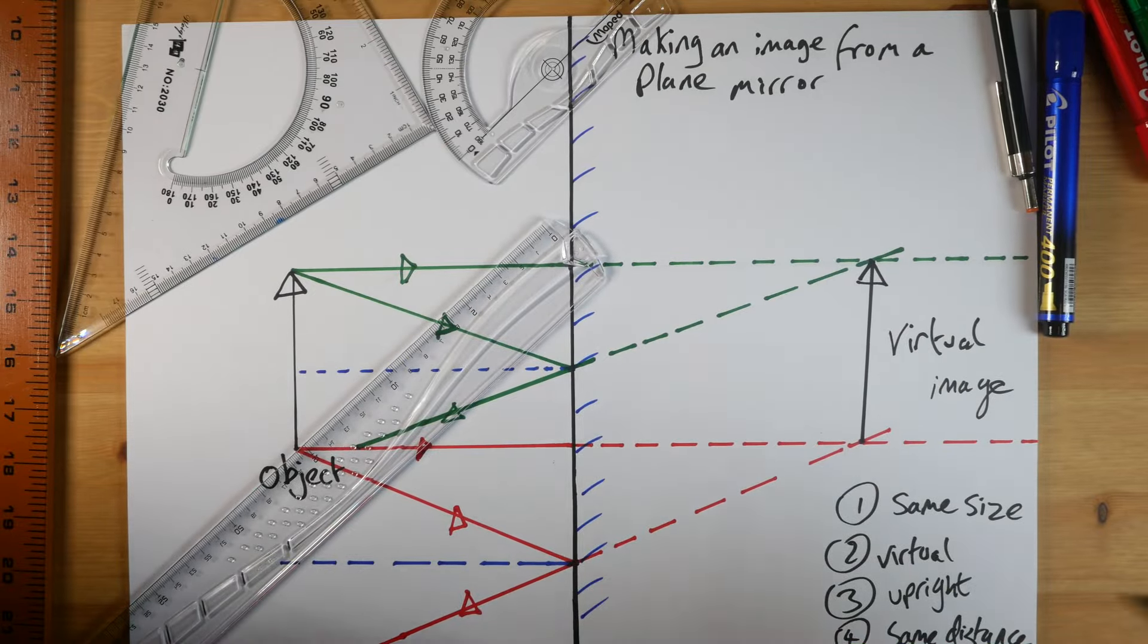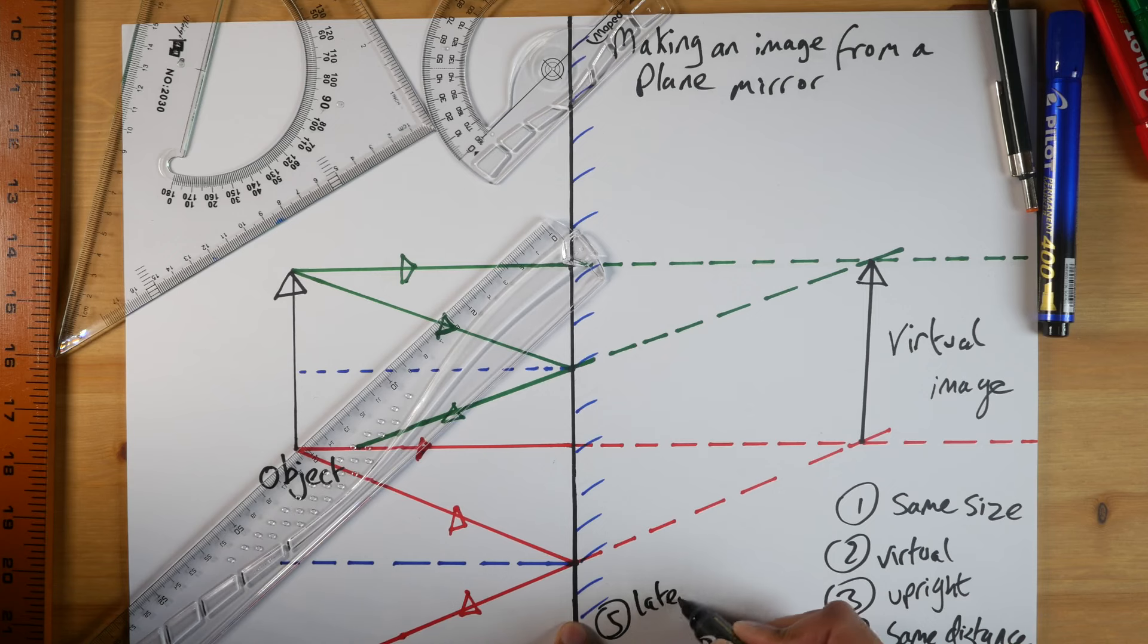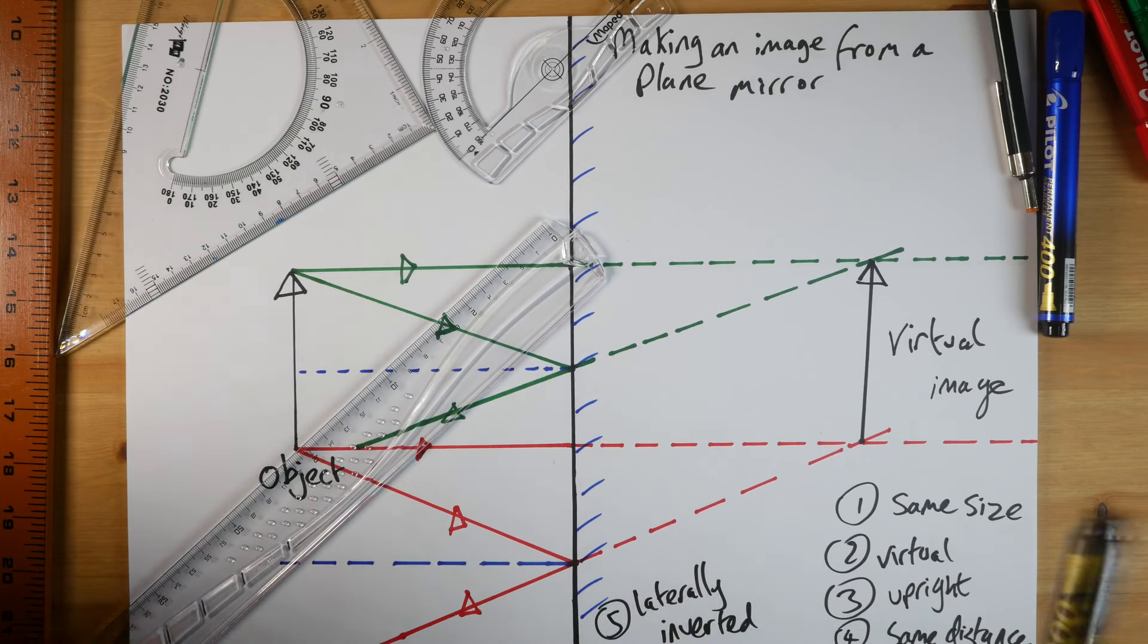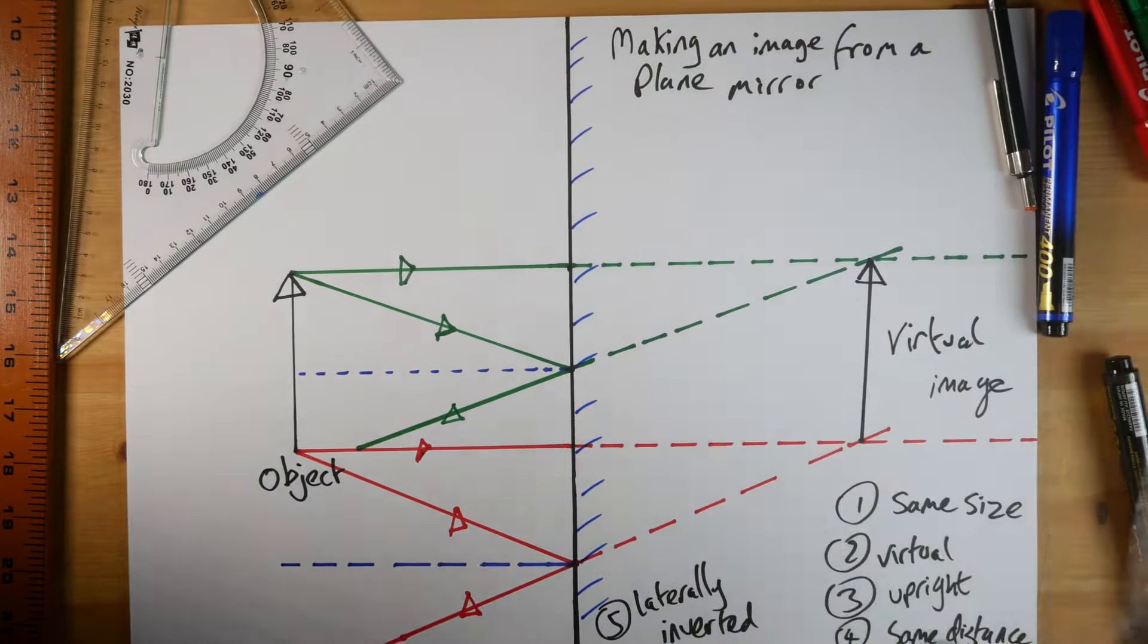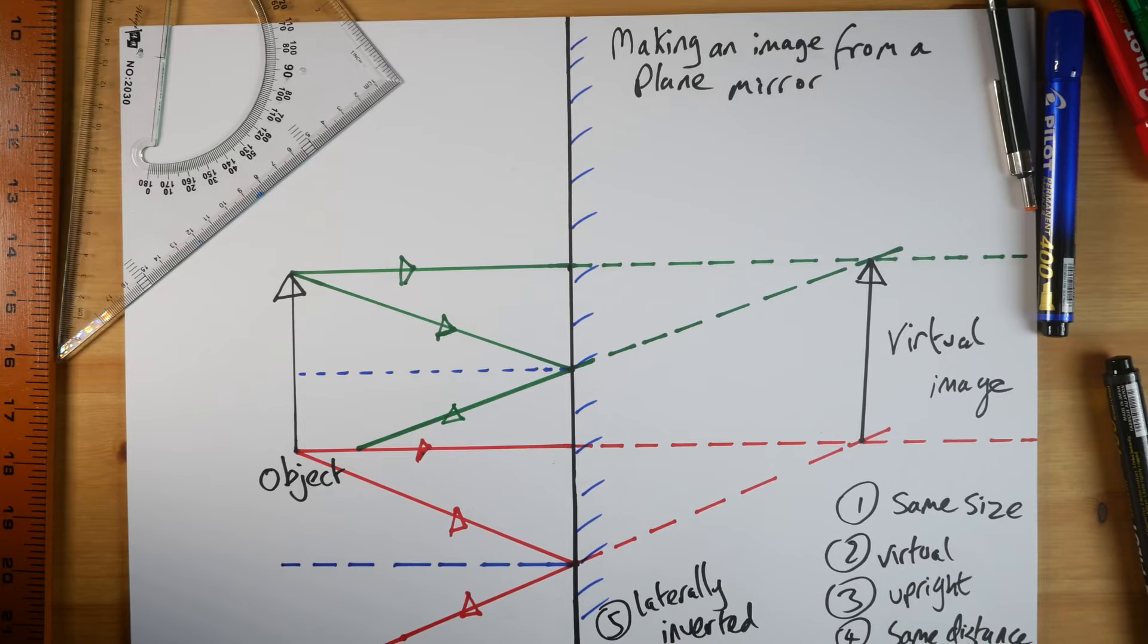And finally, it is what we call, I'm going to have to write it over here, laterally inverted, laterally inverted, which means the left becomes right and the right becomes left. That's how you make an image from a plane mirror. Thank you very much for watching. Goodbye.